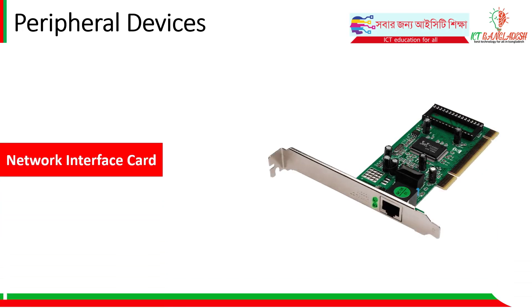The Network Interface Card, or NIC, is another internal peripheral device. The NIC connects to the motherboard and provides a LAN port — an Ethernet port — where you plug in a LAN cable. The NIC sits in an expansion slot on the motherboard and provides internet/network connectivity.